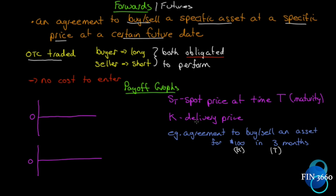K is the delivery price — the specific price the parties agree to for the future date at time T. So let's look at an example: an agreement to buy or sell an asset for $100 in three months. T is three months, K is $100. We can place K on the chart representing both buyer and seller, both obligated to perform at that $100 mark. We'll put the buyer above and the seller below to show their payoff charts.